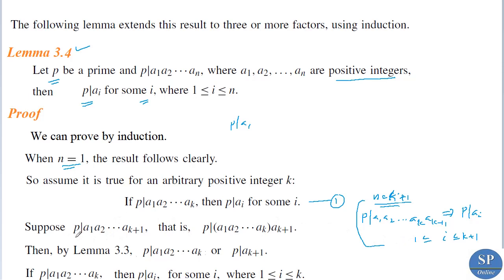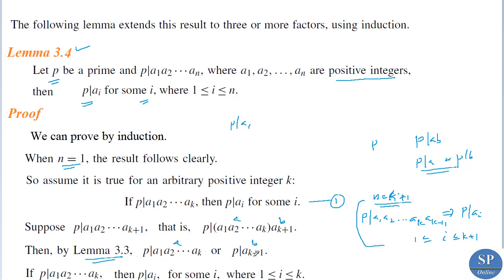Suppose p divides a₁·a₂·…·aₖ₊₁ — that is, p divides (a₁·a₂·…·aₖ)·aₖ₊₁. By the previous lemma, Lemma 3.3, we know if p divides ab and p is prime, then p divides a or p divides b. Taking a = a₁·…·aₖ and b = aₖ₊₁, either p divides a₁·a₂·…·aₖ, or p divides aₖ₊₁.